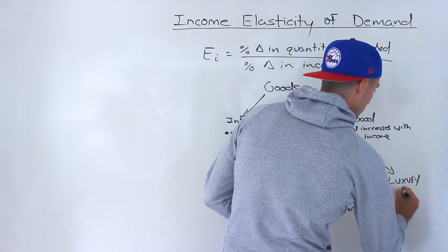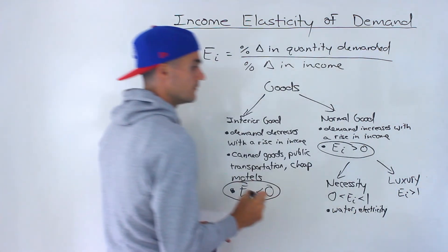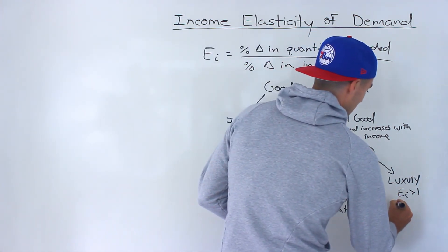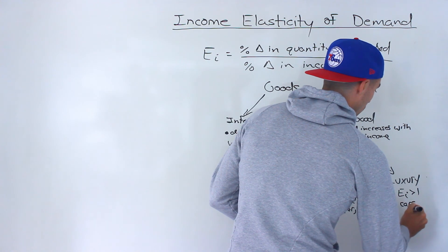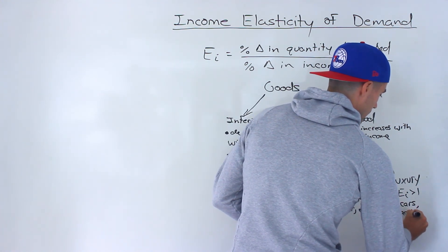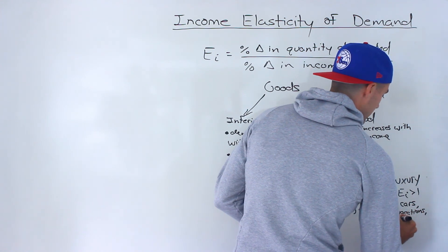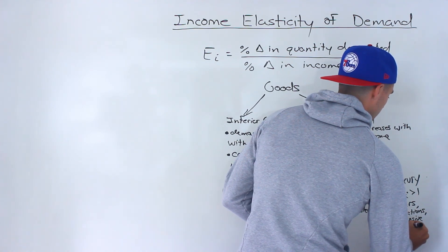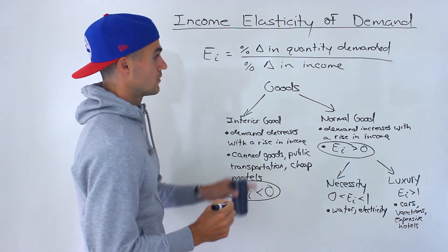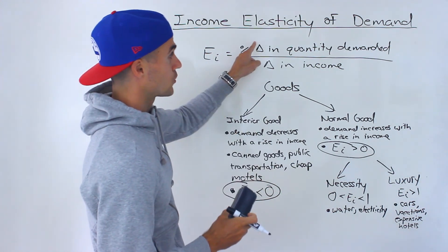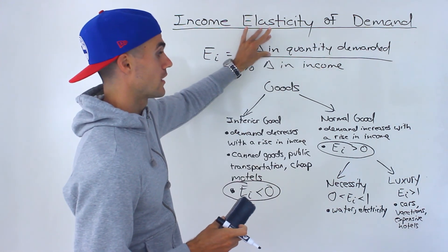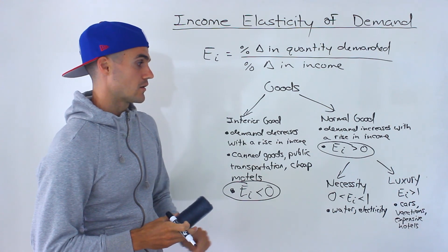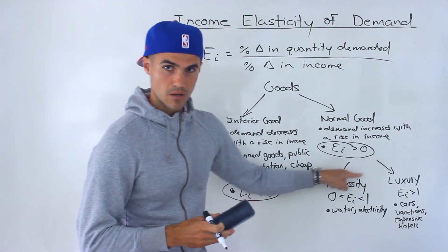If that coefficient is greater than one, that's going to be a luxury — stuff like cars, vacations, or expensive hotels. The quantity demanded of that stuff is increasing a lot more, so the numerator is going to be greater. If that coefficient is greater than one, then we consider it a luxury. You may have these two subcategories depending on your prof or textbook.